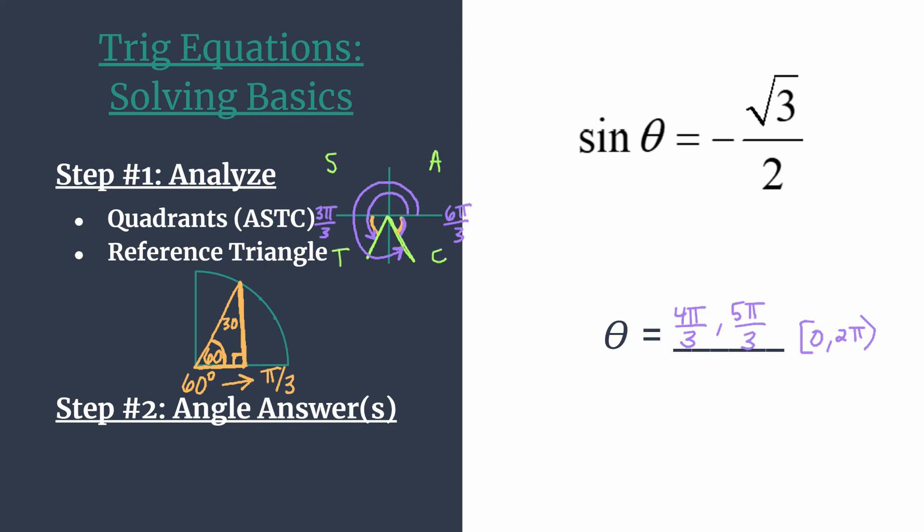To finish up, let's take a look at how we could solve this same equation, but say you've been asked to find all solutions. You just need to make a simple little adjustment to your original answers. We're going to write an equation that says 4 pi over 3 plus all its coterminal angles. And we'll do the same thing for 5 pi over 3. Remember, a coterminal angle is just angles that share the same terminal side, what we were looking at in our analysis, but you just rotate different amounts to get there.